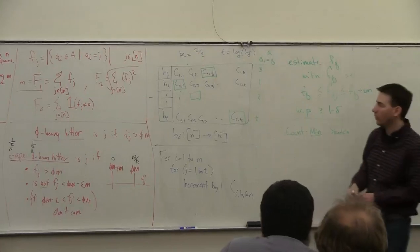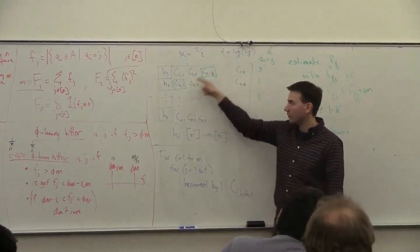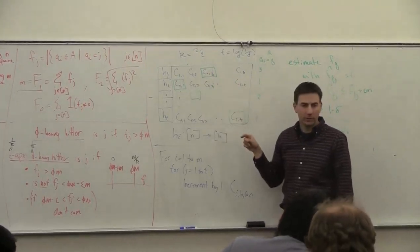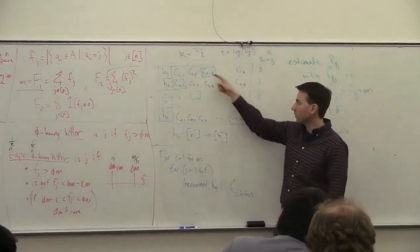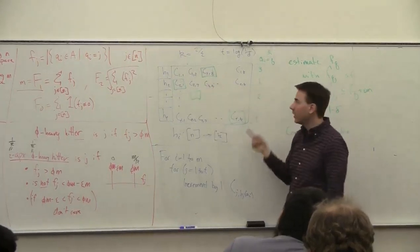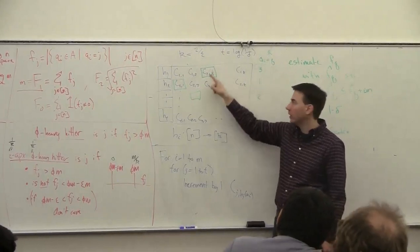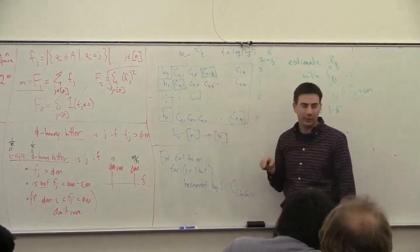What is the first thing I do? I'm going to look at all these t counters here which correspond with this q. My hash functions are consistent, so I know that if I had incremented any counters for q, it would have been these t counters.